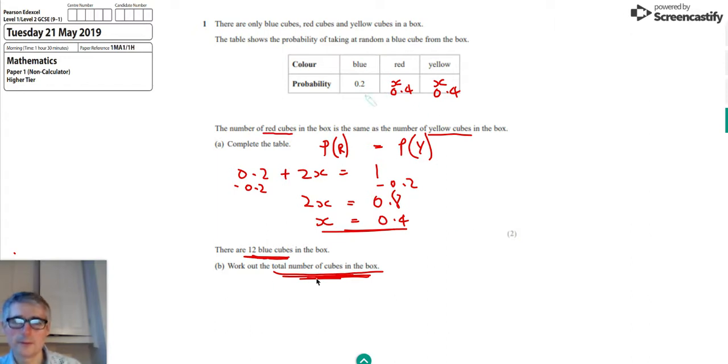So what we can see is, well, if the probability of getting a blue is equal to 0.2, then we can see that the probability of getting a red or a yellow is actually twice that. So that means there must be twice as many red and yellow cubes as there are blue ones.